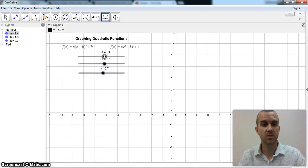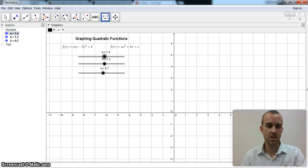Now what I want to do is construct the function. So f of x equals, and I'm going to say a for the a slider, parenthesis, x minus the h slider. And then I can go over, caret key for the squared term, plus k.